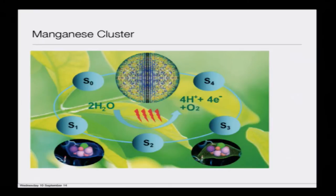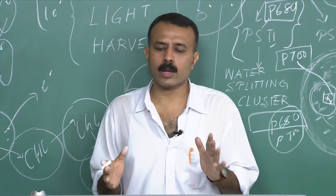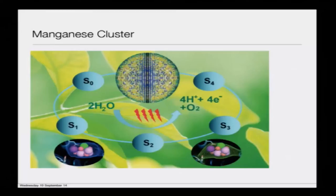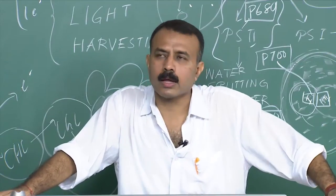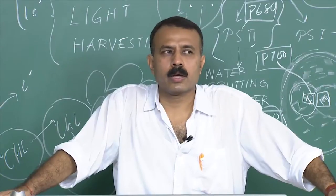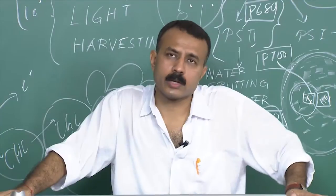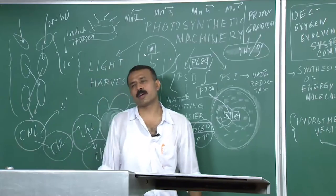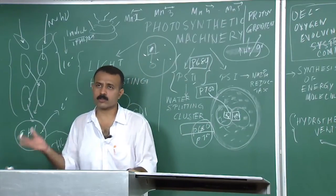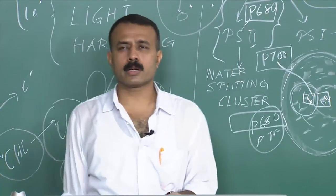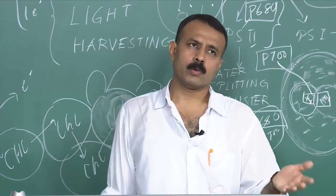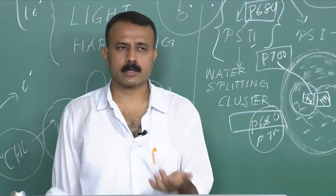Moving on to the next topic — lecture 34 — we will talk about how people are trying to utilize this whole idea to generate hydrogen, which can be used as a fuel. The manganese cluster remains a dream for those interested in energy: to emulate a structure that splits water, giving a ready source of electrons and hydrogen that can be stored as energy according to convenience. Several efforts have been made in this context for dye-sensitized solar cells and likewise.